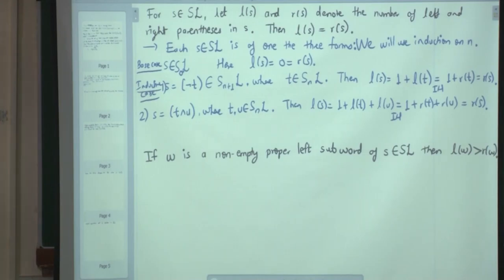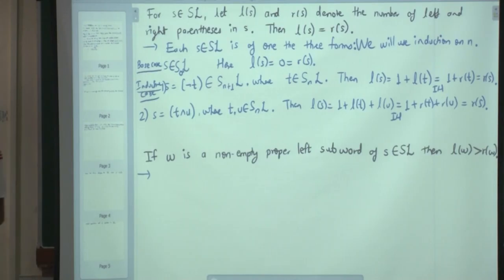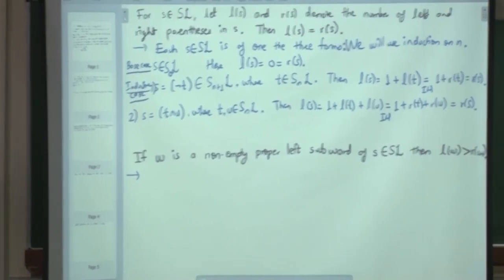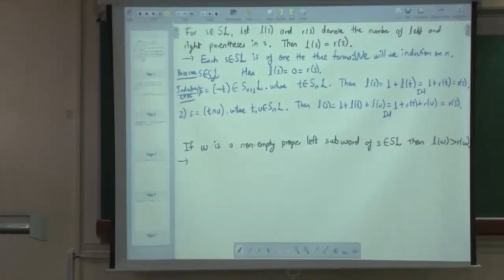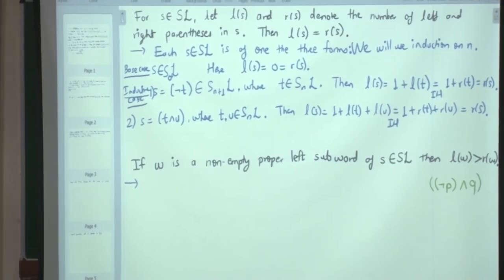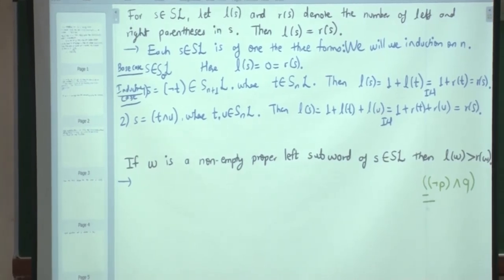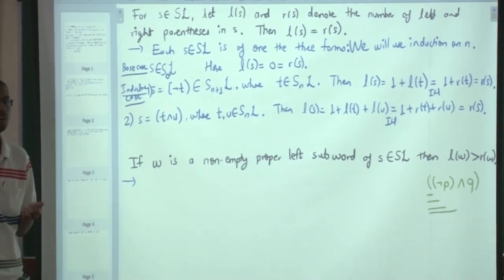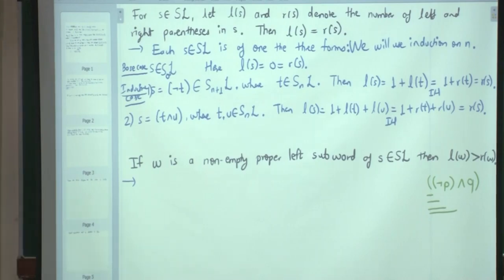Very simple proof. Now let us see if you can use the same logic here. Suppose W is a non-empty proper left subword of a propositional formula. For example, in a formula one can take just one parenthesis, two parentheses, and so on as left subwords. We need to show that L(W) is bigger than R(W). The method of proof is induction — there cannot be anything else.